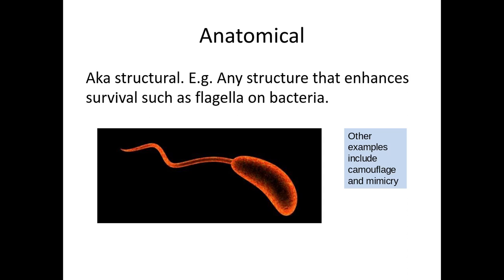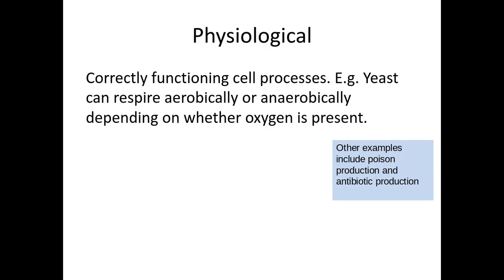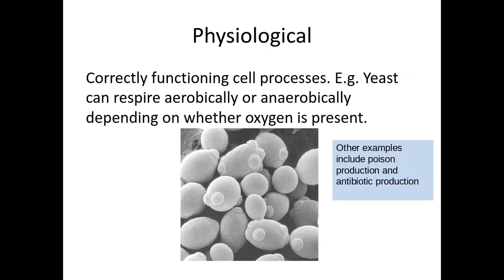The first adaptation is anatomical, and this is normally a structural element to the organism, such as having a flagella on bacteria. The other is physiological, and this is where we have usually the development of an enzyme, a hormone, or a metabolic pathway which helps that organism to survive better. For example, aerobic or anaerobic respiration are examples of these.